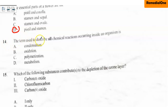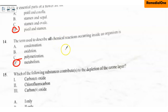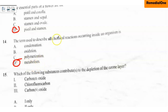Question fourteen: the term used to describe all chemical reactions occurring inside an organism is A. condensation, B. oxidation, C. polymerization, D. metabolism. The correct option is metabolism. Chemical reactions inside an organism can be grouped into catabolism — reactions leading to the breakdown of chemicals — and anabolism — reactions leading to the formation of compounds. When we put these two together, we call it metabolism.